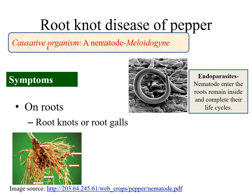They feed on these roots and as a result they cause many symptoms. The major symptom of root knot disease of pepper is root knots or root galls. It is a tumor-like outgrowth structure.